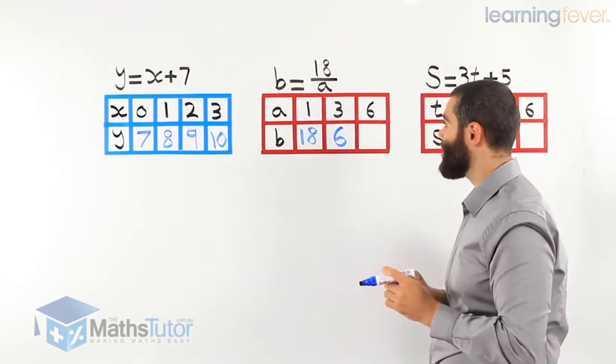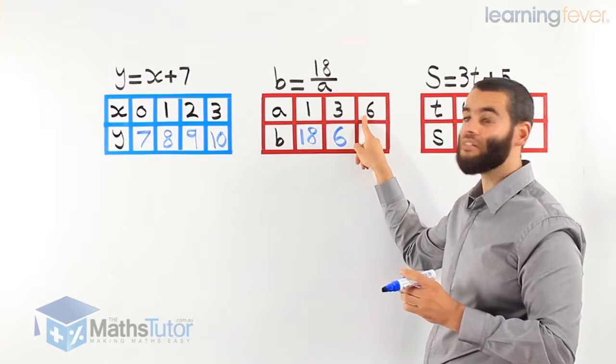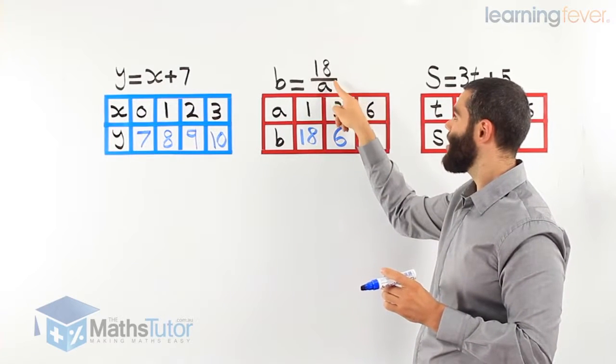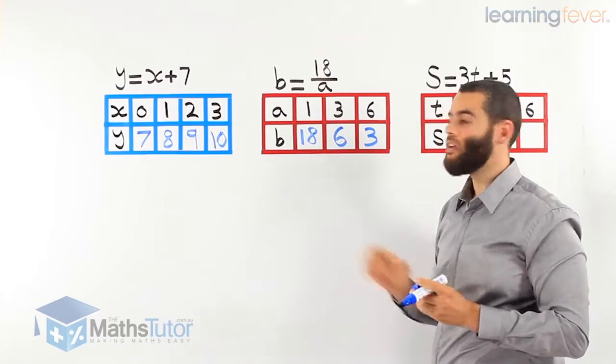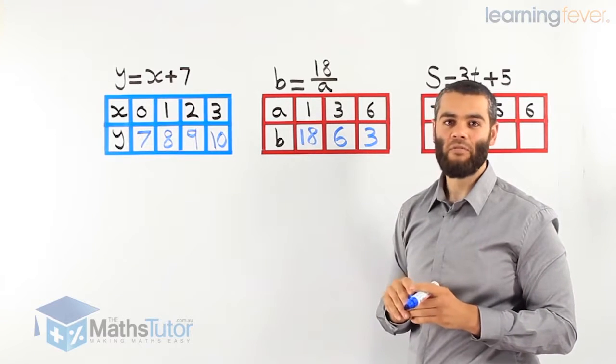And the last one, a is going to be replaced with 6. 18 divided by 6, our answer is 3. Again, we completed the table of values.